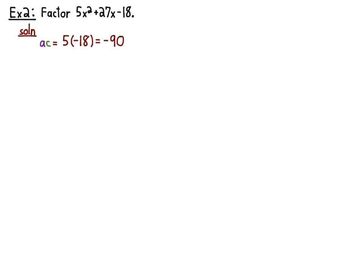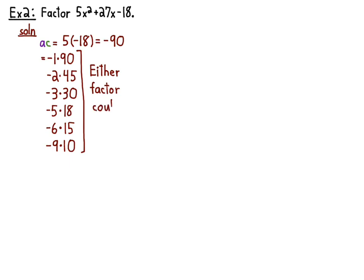So A times C is negative 90. Now you have to write out all the ways of factoring negative 90. Since it's negative, one of your factors is negative and one's positive. So what I usually do with this is I'll just make the first one negative and the second one positive. And just remember that it could be switched. That way you don't have to write out twice as many products.